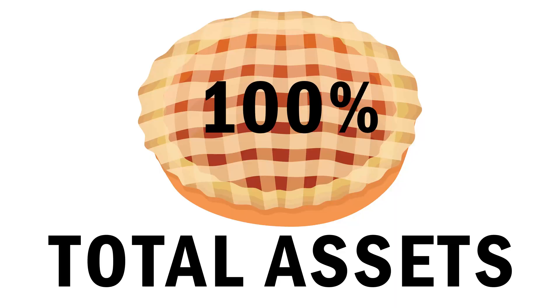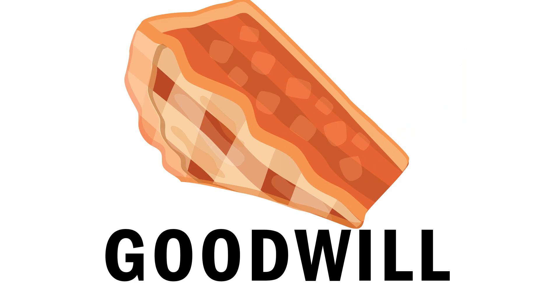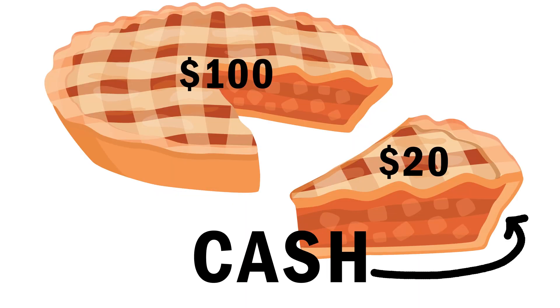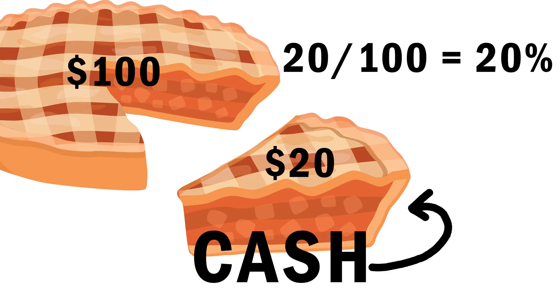For example, if we look at a balance sheet and perform vertical analysis on total assets, we can figure out how much of the total assets is allocated to cash. Take a look at this pie chart — it represents 100% of the total assets of Company X, and each slice represents a different item in the total assets section. By performing vertical analysis on the cash slice, we can determine it represents, say, 20% of total assets.